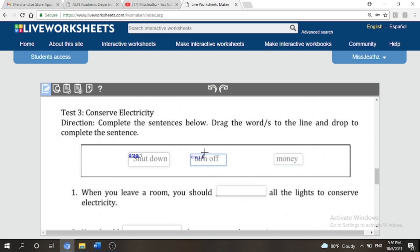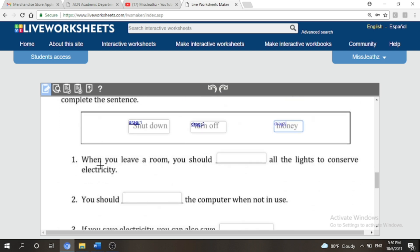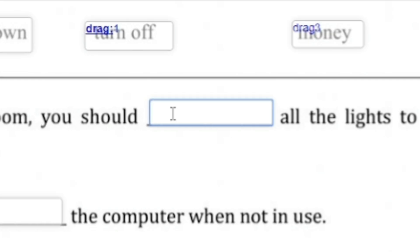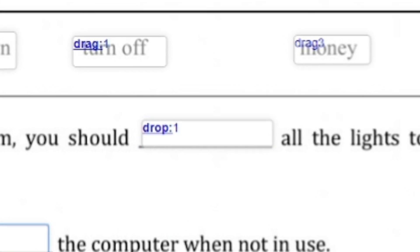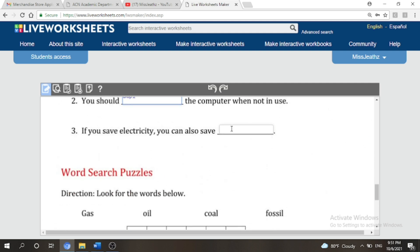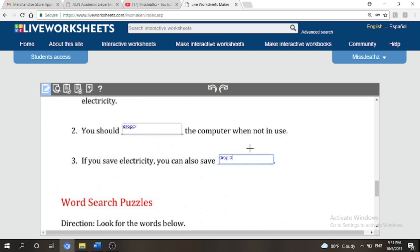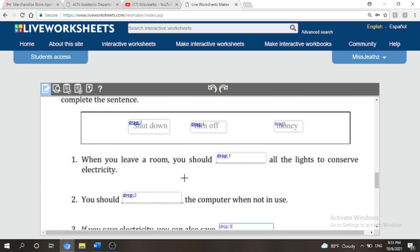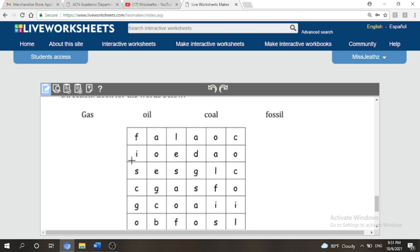So these are the words that we are going to drag to the line. So let me just change this one into one since this is the number one. Drag colon number two and then drag colon number three. Now the next command that we're going to use is the word drop, then same number with number one, dropped two, drop colon three. When you leave a room you should turn off all the lights to conserve electricity. So drag and then drop, same goes to number two and number three. Now let's proceed to word search puzzle.